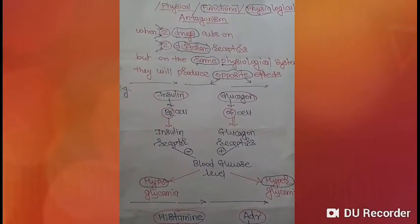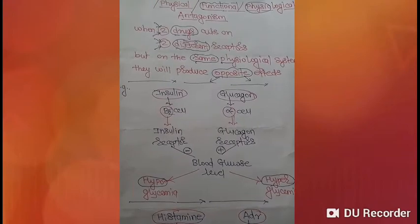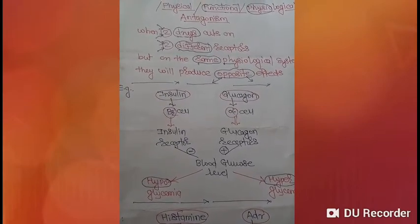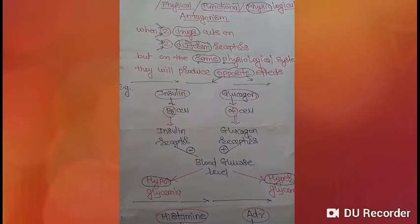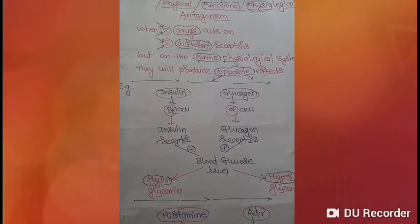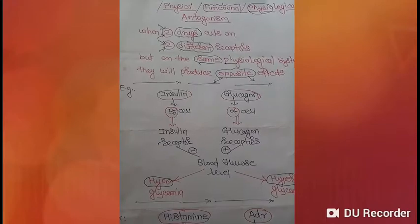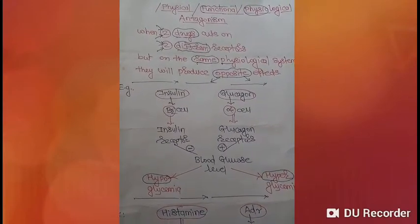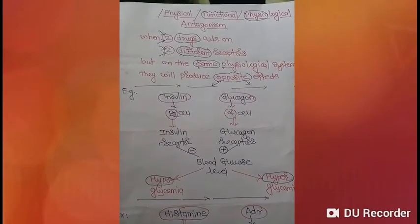For example, insulin and glucagon. Insulin is secreted by the beta cells of the pancreas; glucagon is secreted by the alpha cells of the pancreas. They act on two different receptors — insulin acts on insulin receptors, glucagon acts on glucagon receptors — but on the same physiological system: blood glucose level.